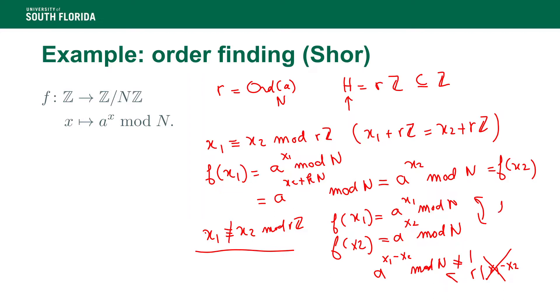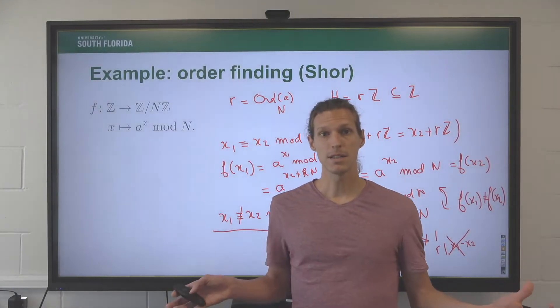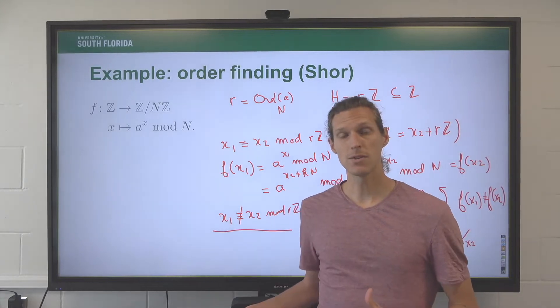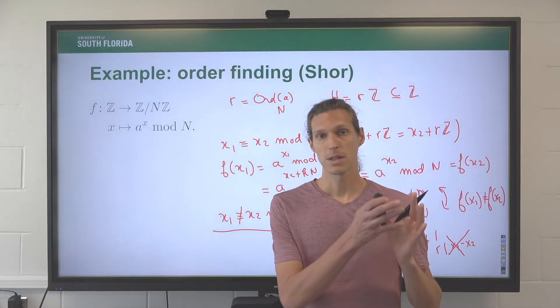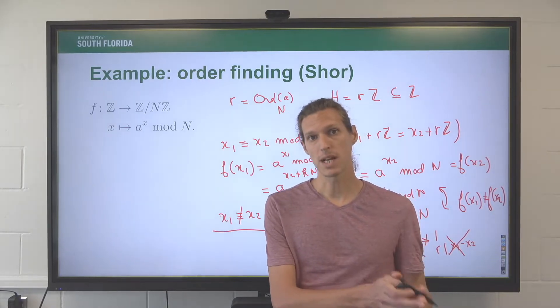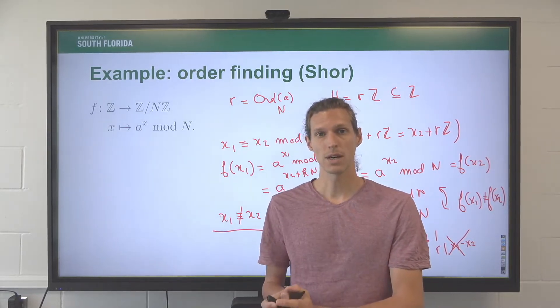So what it means here is that F of X1 is different than F of X2. And so, in the end, what we have is that we map different cosets to different values of A to the X mod N, and we map each element of a coset to the same value. So then we are exactly in the framework of the hidden subgroup problem.